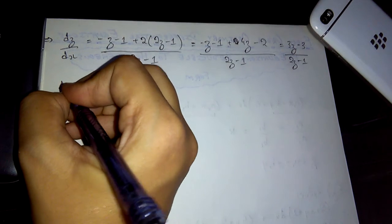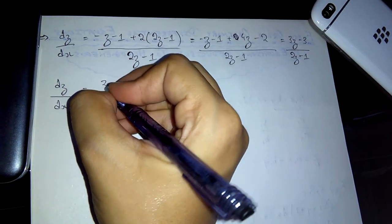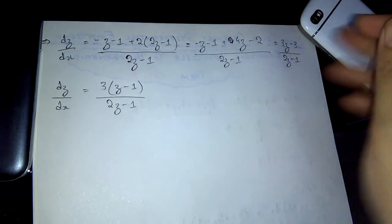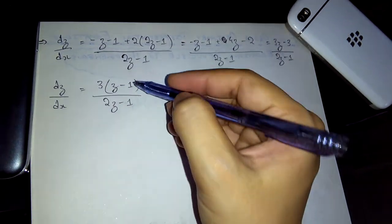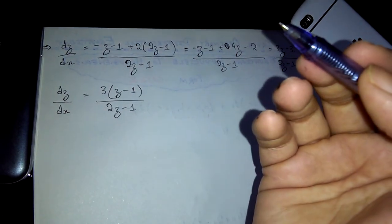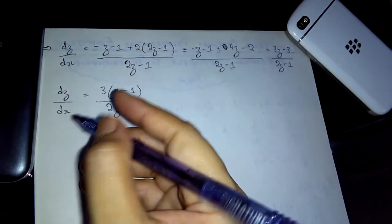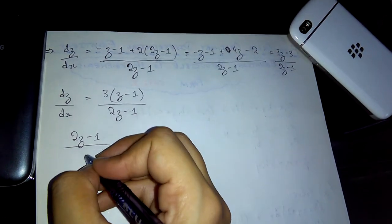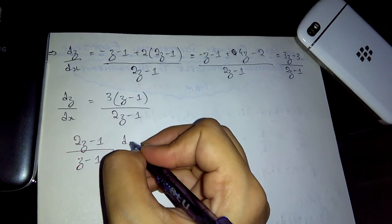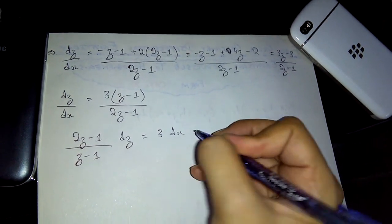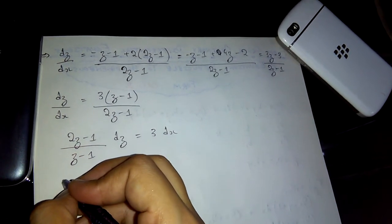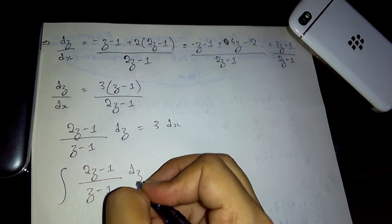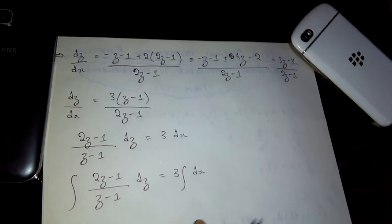Now we apply basic integration after separating the variables. The function is entirely expressed in terms of z alone, so we rearrange to get (2z - 1)/(z - 1) dz = 3 dx. Integrating both sides, we apply the integral notation to both sides.